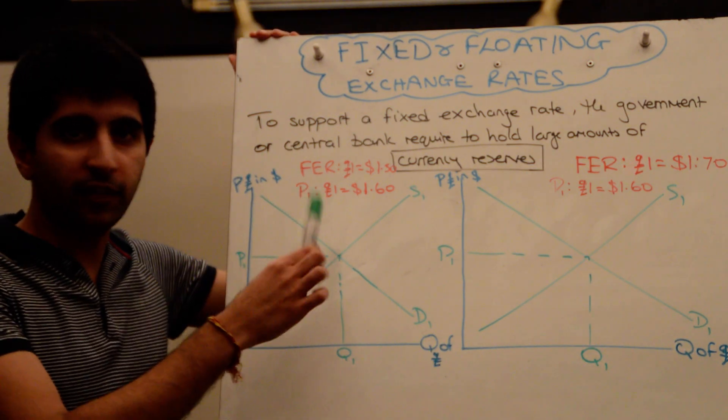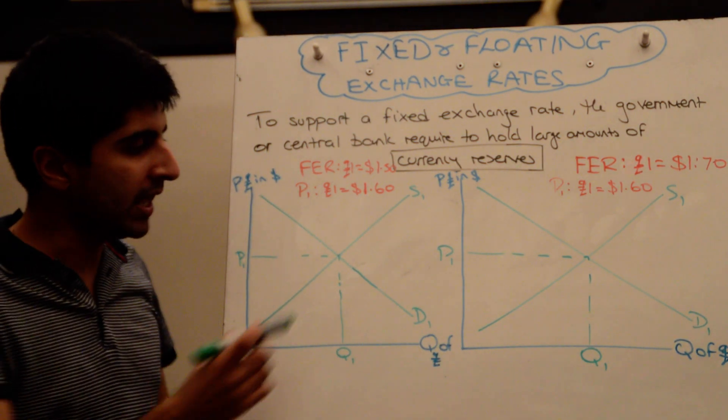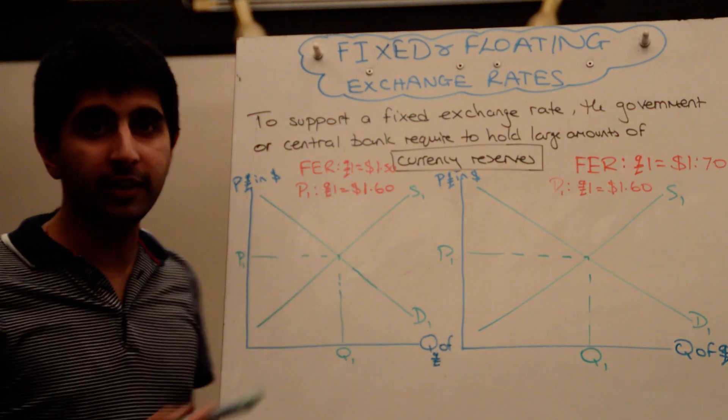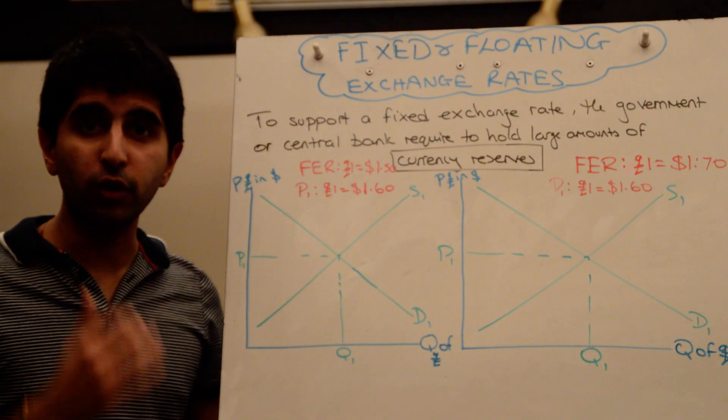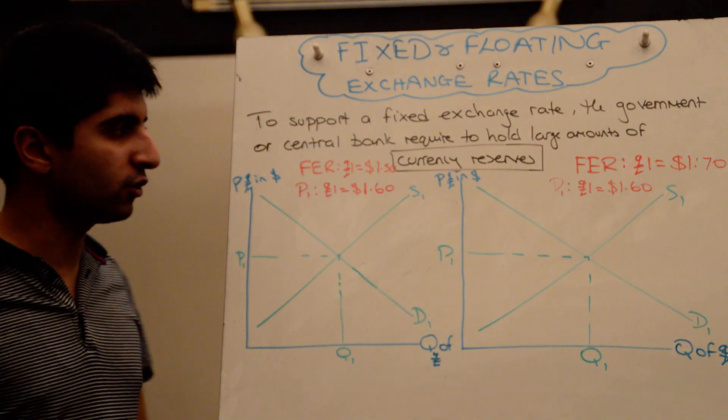In this, on the left-hand side of this market, currently, the equilibrium being shown is one pound is equal to $1.60. An overvalued pound, a pound that's stronger than what it needs to be, according to the fixed exchange rate.